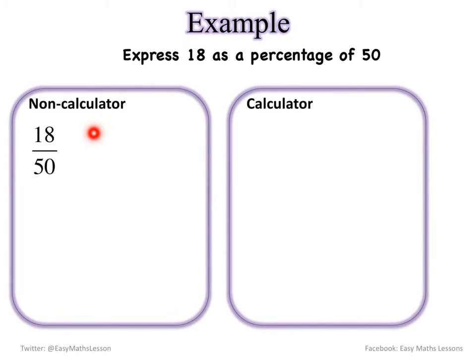So in the non-calculator method I need to try and find a denominator that is equal to 100. So if this one is 50, if I times both sides by 2 then my denominator will be out of 100. And we know from previous experience that anything out of 100 is always a percentage. So 36 out of 100 is a percentage, so 36%.